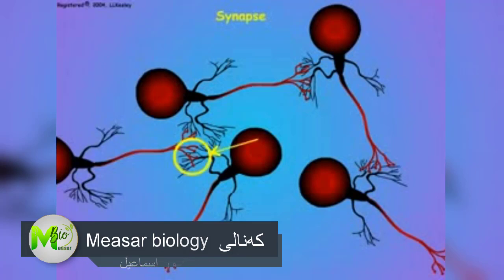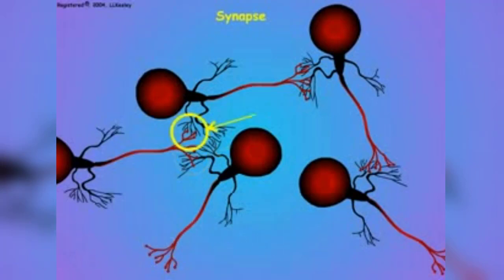The synapse is the connection between two neurons where information is transferred and interpreted. It is a major site for the toxic actions of many insecticidal chemicals. To understand how an insecticide can disrupt the nervous system, it is essential to understand how a synapse functions.